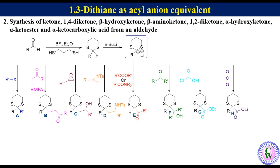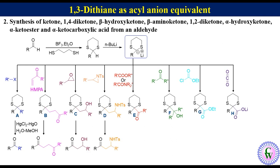These intermediates after hydrolysis respectively give ketone, 1,4-diketone, beta-hydroxyketone, beta-aminoketone, 1,2-diketone, alpha-hydroxyketone, alpha-ketoester, and alpha-ketocarboxylic acid.